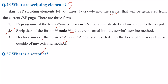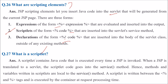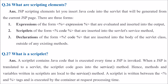What is a scriptlet? A scriptlet contains the Java code that is executed every time a JSP is invoked. When a JSP is translated to a servlet, the scriptlet code goes into the service method. Hence the variables written in scriptlets are local to the service method. A scriptlet is written between the angle-bracket percent and percent angle-bracket tags and is executed by the container at request processing time.